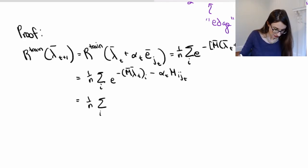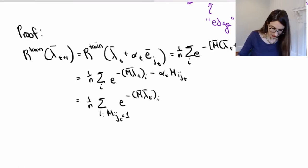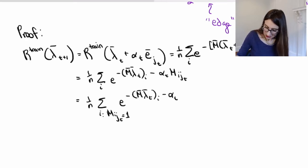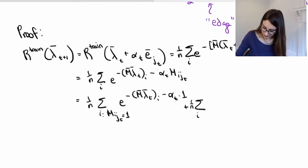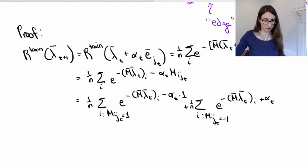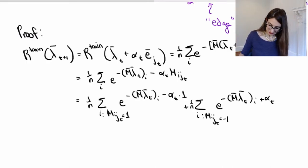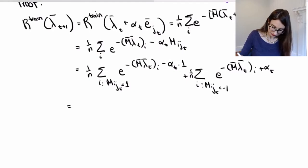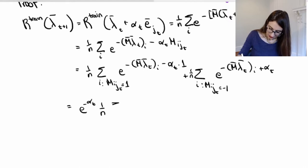So (1/n) sum over i such that m_{i,j_t} is 1, where this alpha_t is multiplied by 1 which is m_{i,j_t}. Plus the other term, which has a plus alpha_t because it's minus alpha_t times m_{i,j_t} which is negative 1. Then I'm going to pull out the e to the negative alpha_t from the first term and the e to the alpha_t from the other term.